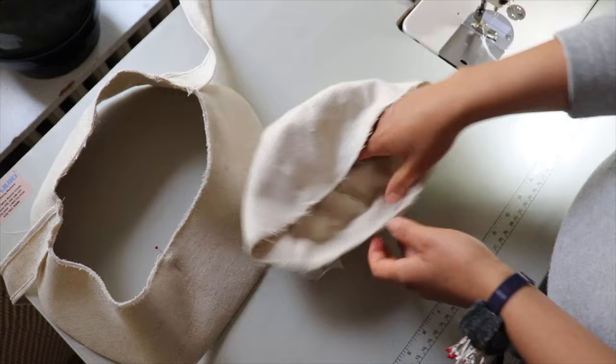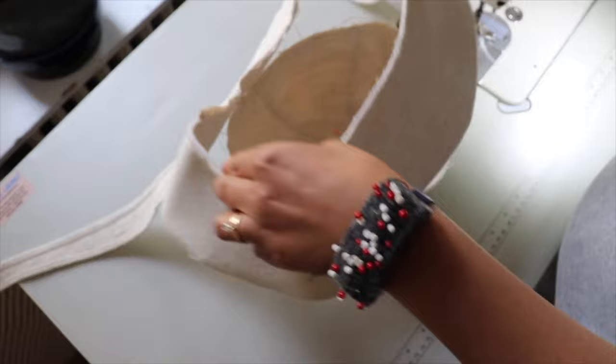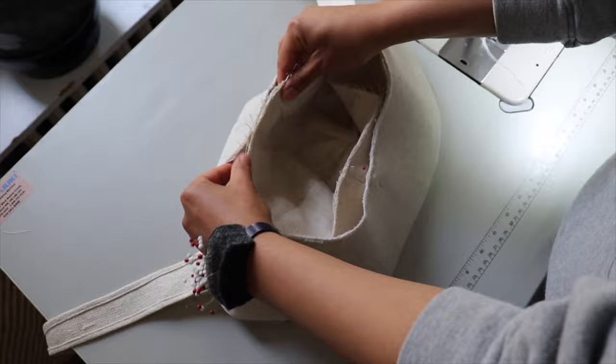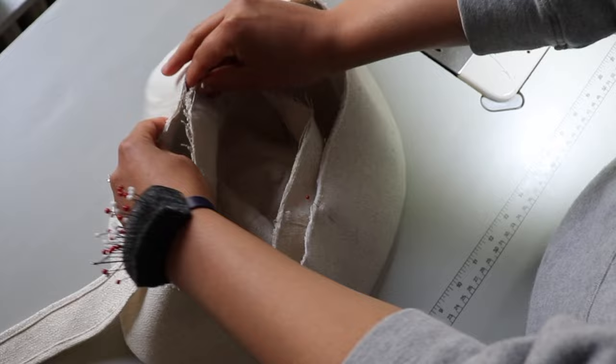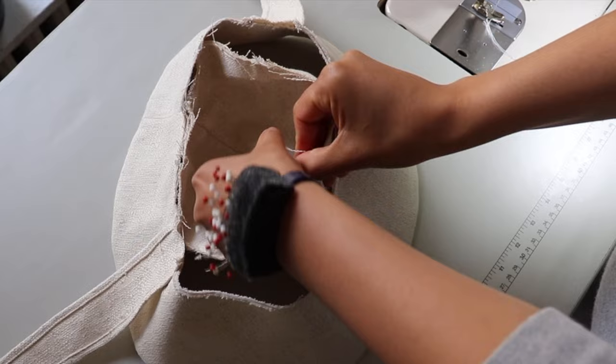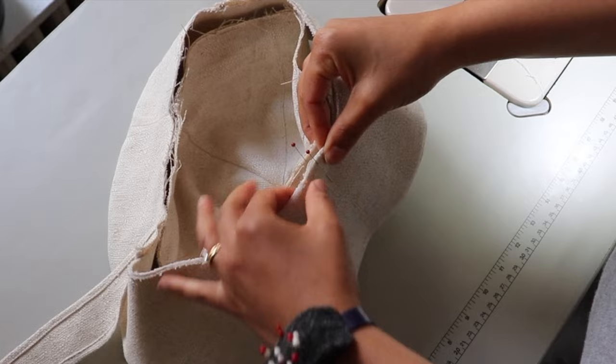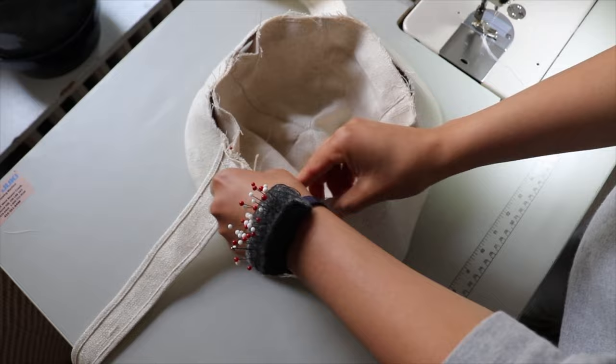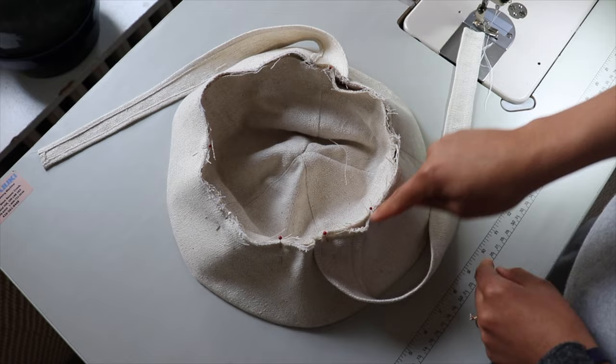We're now ready to sew the cap to the brim. Almost done. Place your hat cap right side out and facing down. With the right side of your brim facing down, pin your cap to your brim. Match one of the cap seams to the brim center back seam. Then match the center of the opposite cap panel to the center of your hat brim. I just fold the cap panel in half to get the center of it and then match it to that little notch that we put in the center of the hat brim.